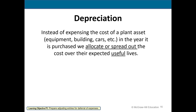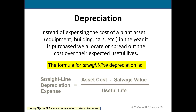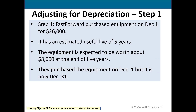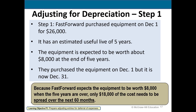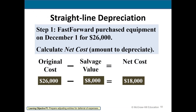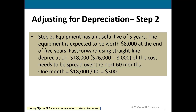Depreciation is used for long-term assets. We spread the cost of the asset over its expected useful life using the straight-line method. The formula is: cost minus salvage value divided by the useful life. Here the cost was $26,000 spread over five years (60 months), subtracting the salvage value of $8,000. So $26,000 minus $8,000 is $18,000, divided by 60 months, means each month we record depreciation expense of $300.